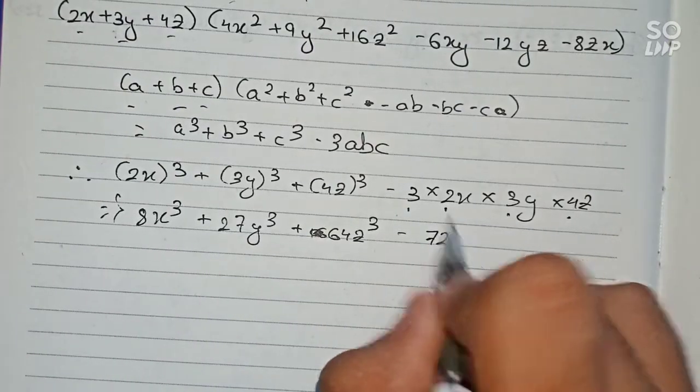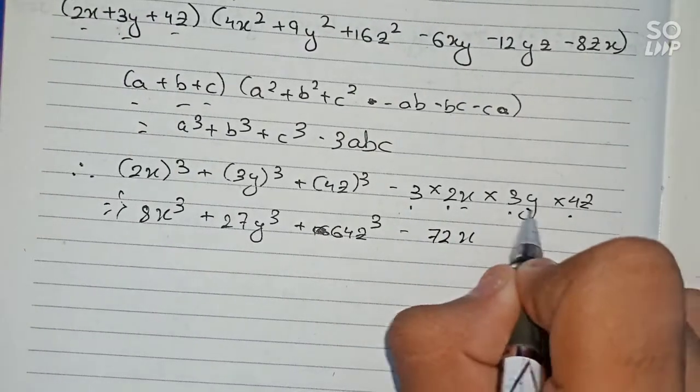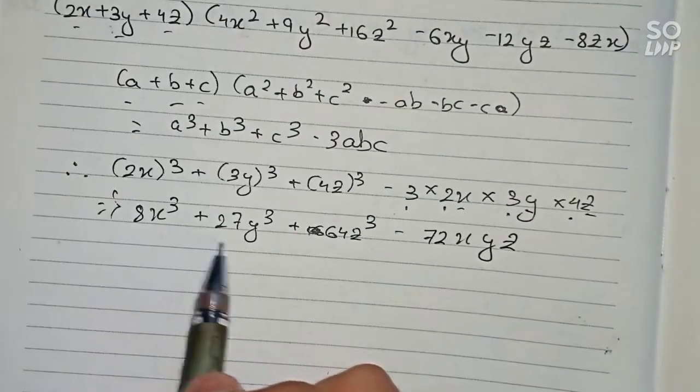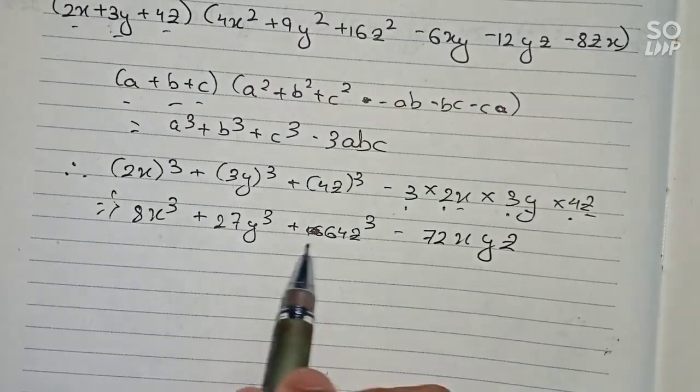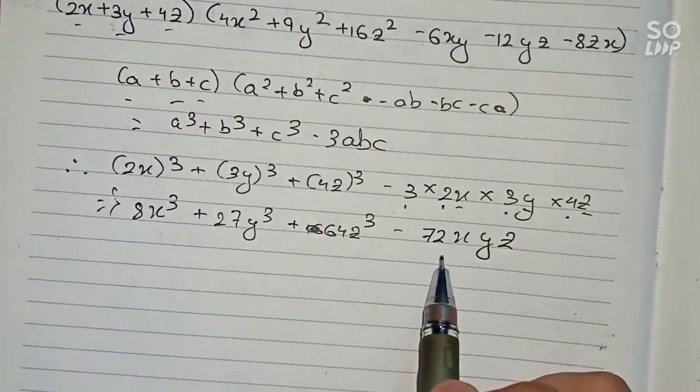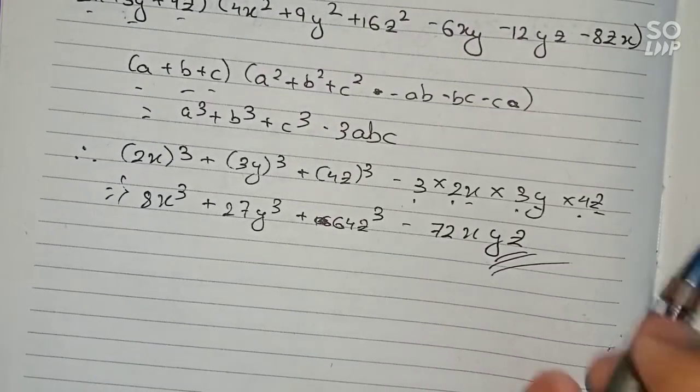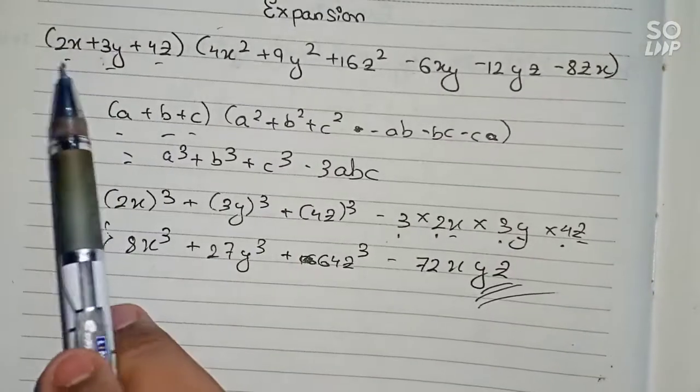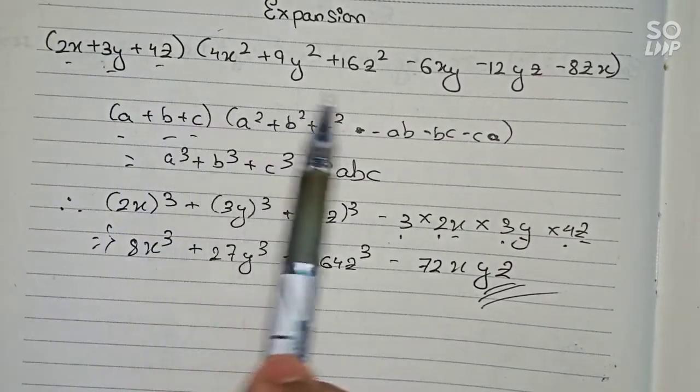So 8x³ + 27y³ + 64z³ - 72xyz is our final answer for this question. This is the expanded form of (2x + 3y + 4z) multiplied by (4x² + 9y² + 16z² - 6xy - 12yz - 8zx).